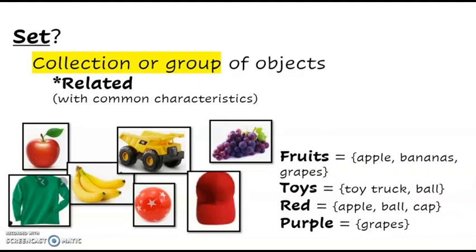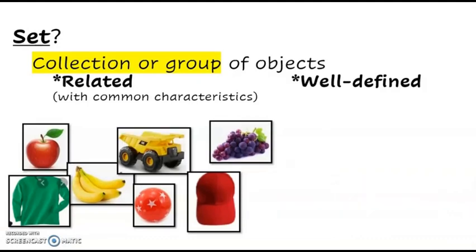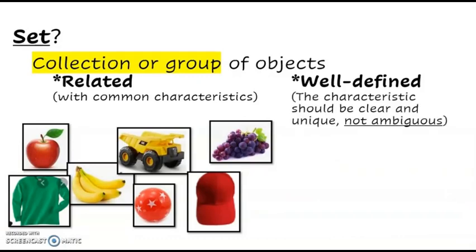Aside from having common characteristics, a set must also be well defined. When we say well defined, it means that the characteristics should be clear and unique, not ambiguous. Meaning, the objects or members of a set are identified based on a clearly defined characteristic and not based on someone's opinion.